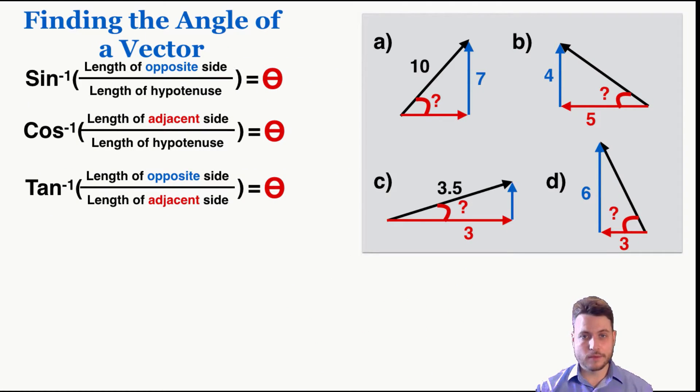These are four example problems that you can try if you'd like to pause the video. You can see here that I'm only giving you two out of three of the sides of each triangle, so to find the angle of the vector you're going to have to decide which trig identity to use.